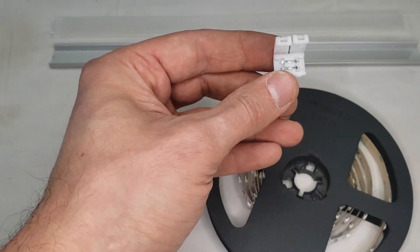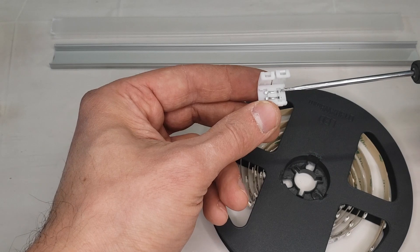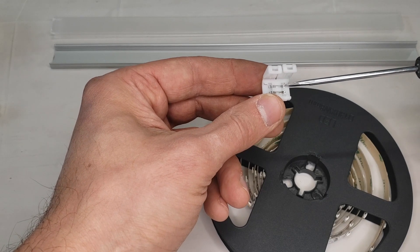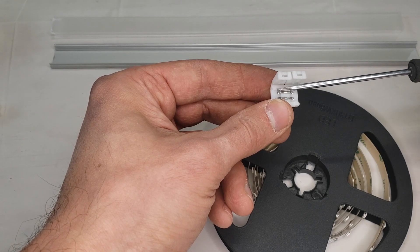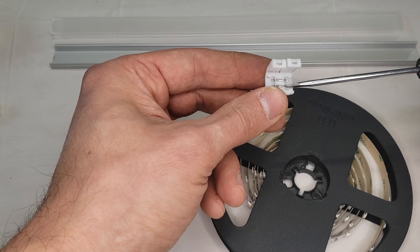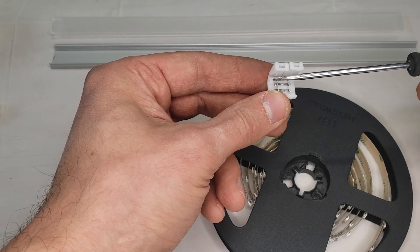Just make sure that the positives and negatives line up on the same side. So if you have the positive on this side on one strip, make sure that it's also on this side on the other strip. Your negative is here and your negative is here. Just make sure they line up.